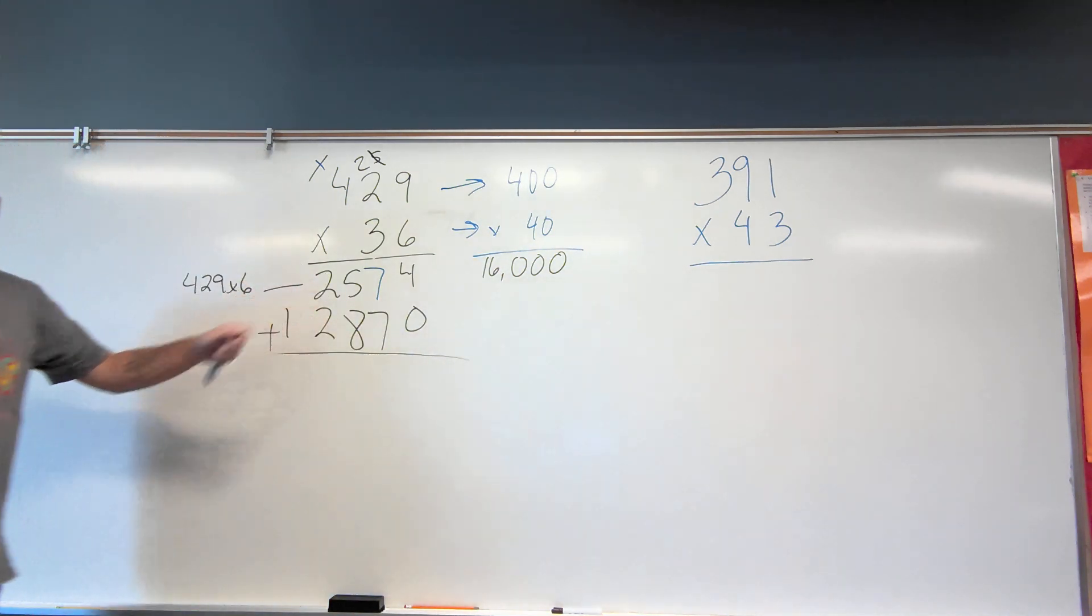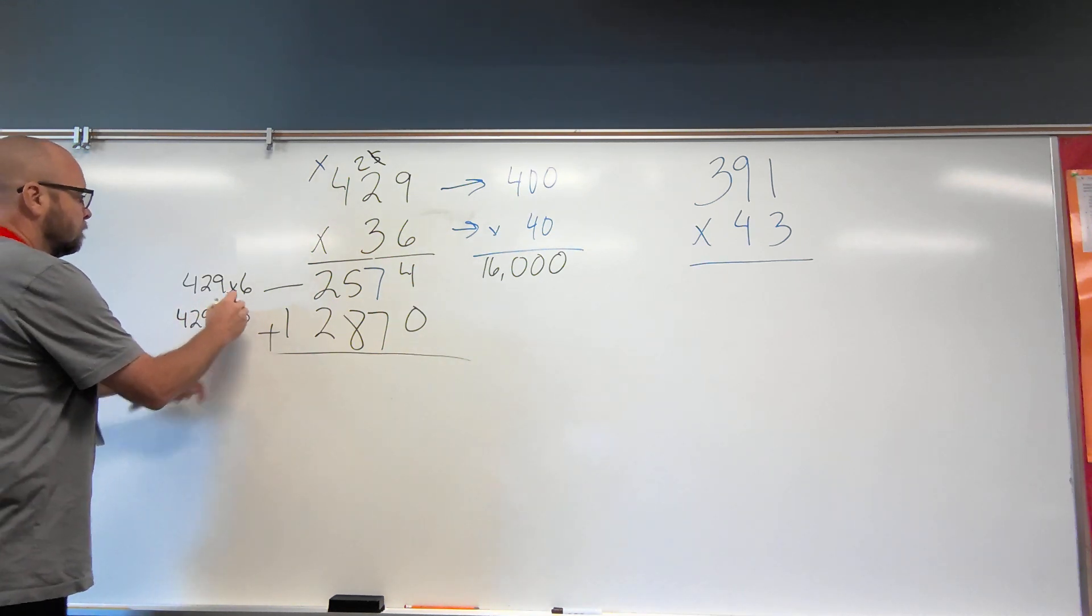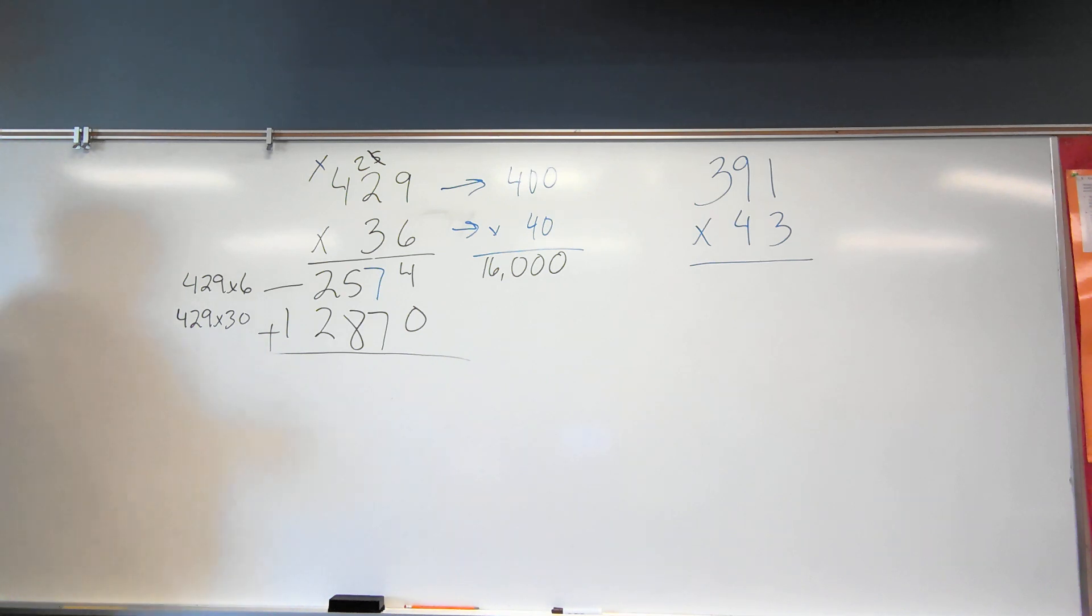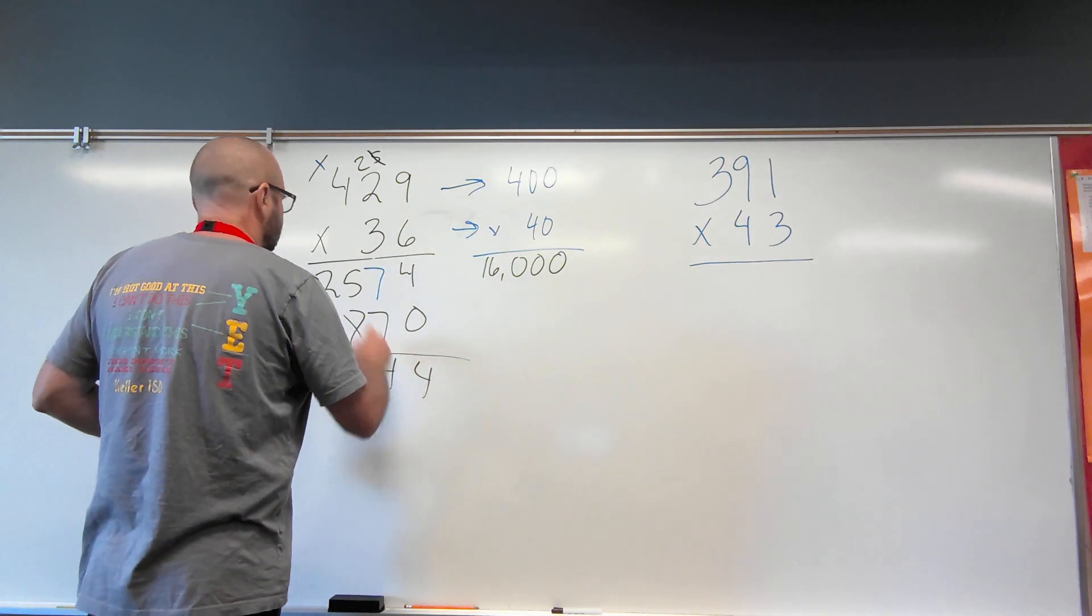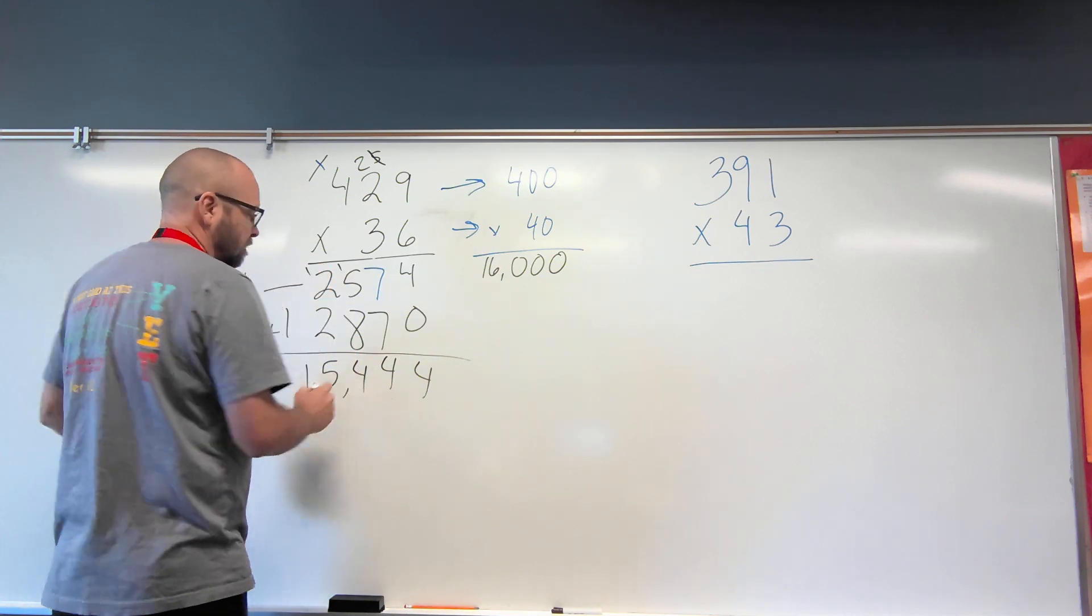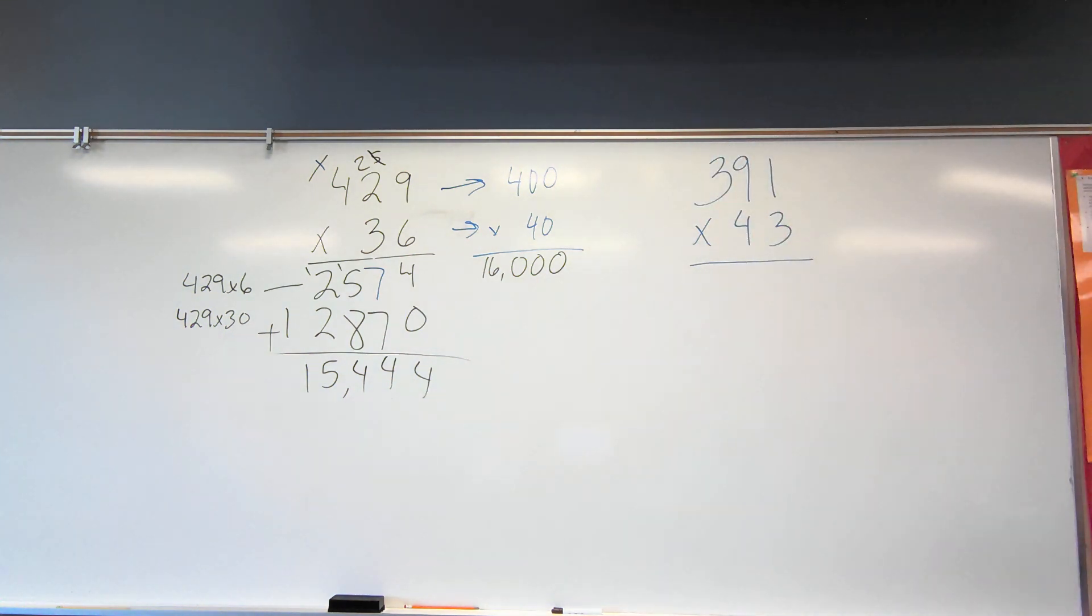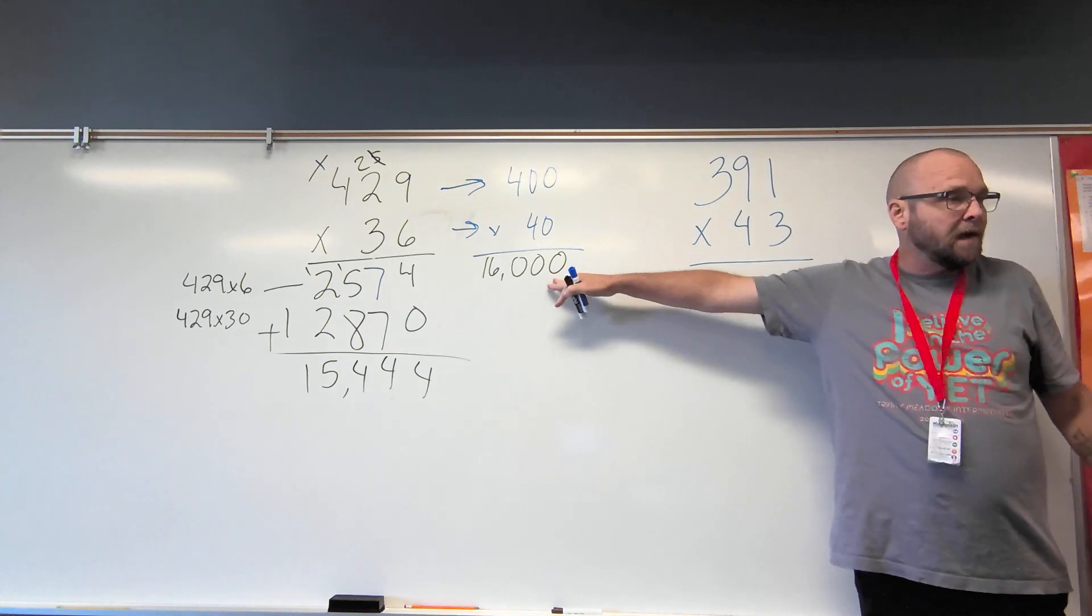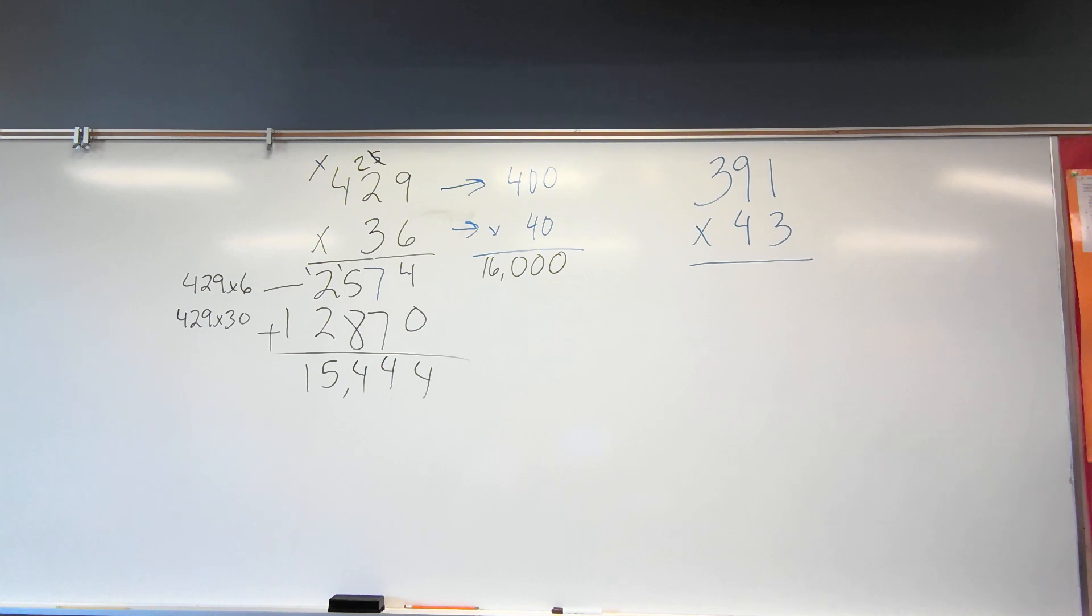I add these two products together. This one was 429 times 30. So if I wanted to, I could break it into two separate problems. And you're going to learn other ways to do this multiplication with multi-digits today. Then I just add these products together. I get 14, eight and six is 14. You should have gotten, if I did my math right, so check me. I got 15,444, which is near my estimate. So as long as I did all my math correctly, then I'm good.